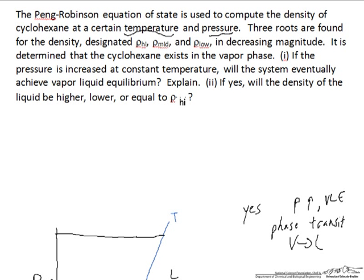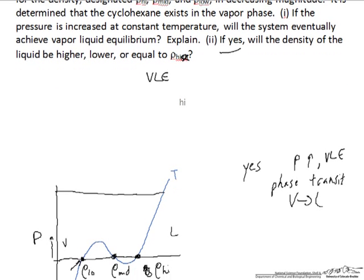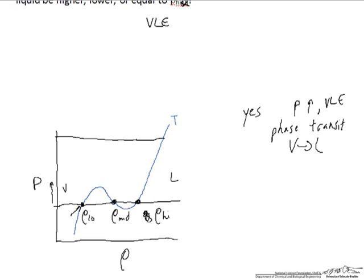Now in part two, it says if yes, will the density of the liquid be higher, lower, or equal to ρ_high? So now we know we're at vapor-liquid equilibrium. And so at vapor-liquid equilibrium, we want to know if the density of the liquid phase is going to be greater than ρ_high, and so we know that we need to get to higher pressure to achieve vapor-liquid equilibrium, as we just discussed in part one of the problem.